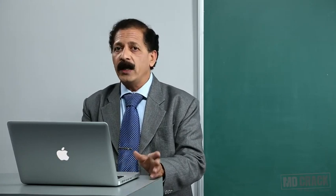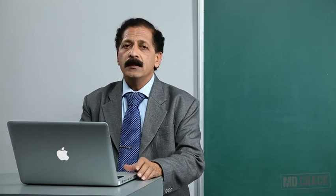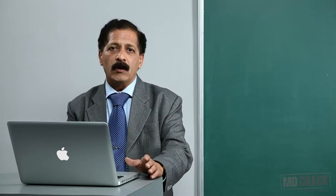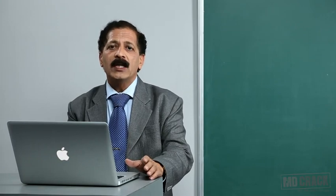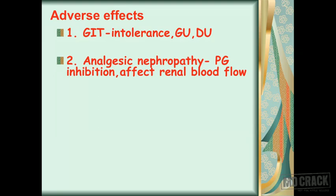Let's explore the adverse effects. The first and very important adverse effect of NSAIDs is on the gastrointestinal tract — gastrointestinal intolerance. This can lead to peptic ulcer production, can aggravate pre-existing gastric and duodenal ulcers, and can cause bleeding from these ulcers.